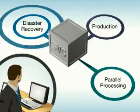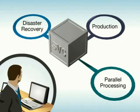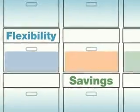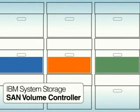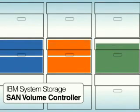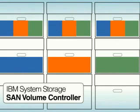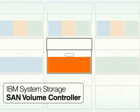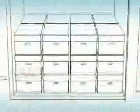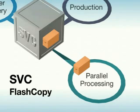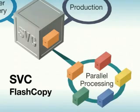Whether replicating data for disaster recovery or just copying information for use in production or parallel processing, virtualized storage from IBM provides new levels of flexibility and savings. IBM System Storage SAN Volume Controller facilitates a lower cost method for replicating data, making better use of storage. With the virtualization of storage, there is no longer the need to limit replication to within the box or from like box to like box. SVC Flash Copy powers local replication between any supported storage devices, enabling production and backup copies to be easily stored on separate disk systems to match their different uses.